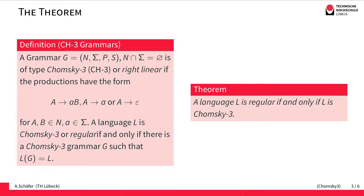We recall the definition of Chomsky 3 grammars. The important part is that we have three kinds of productions. We replace a non-terminal A by exactly one terminal and one non-terminal, or by one terminal alone, or by the empty word.